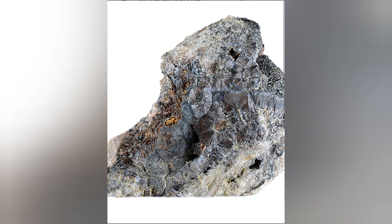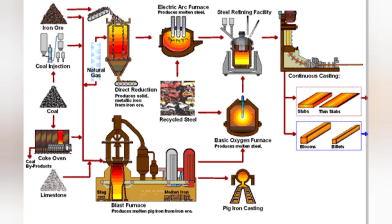Manganese metal oxidizes superficially in air, rusts in moist air, and burns in air or oxygen at elevated temperatures. It decomposes water slowly when cooled and rapidly when heated, forming hydrogen gas and manganese hydroxide. It dissolves readily in dilute mineral acids, generating hydrogen and various manganese salts.